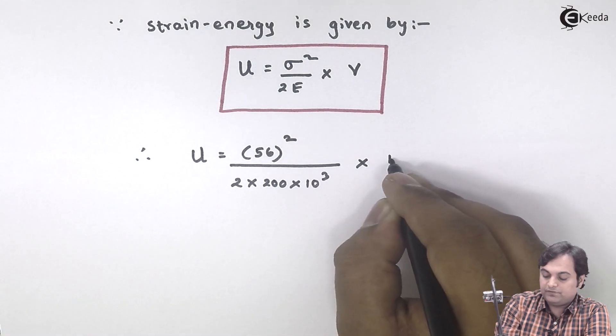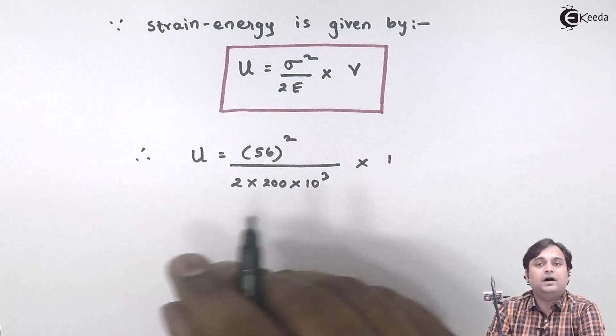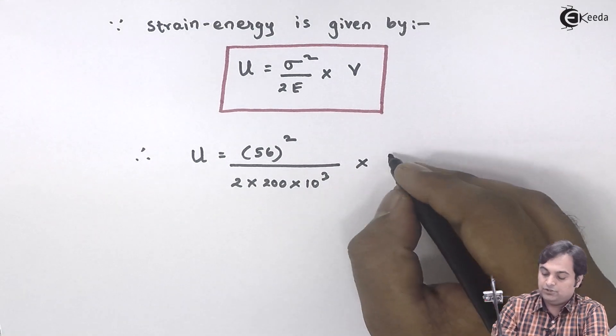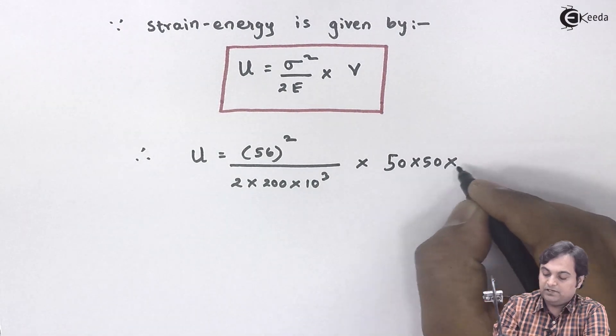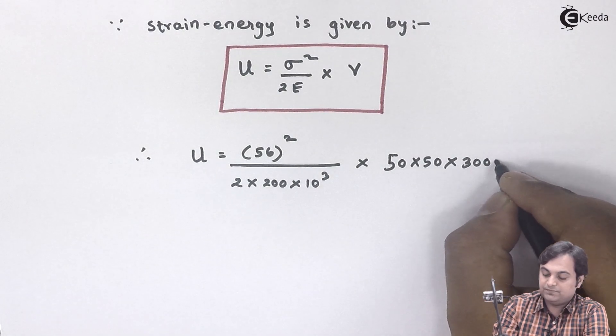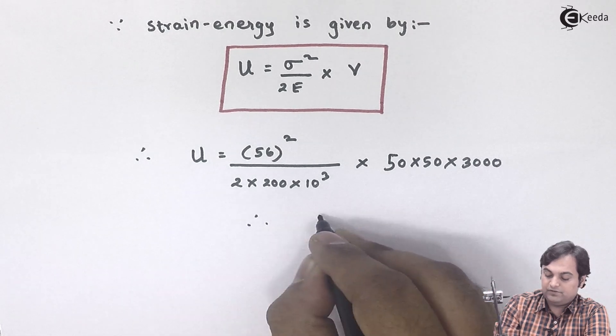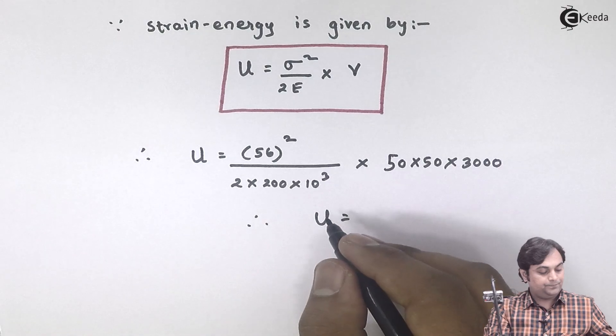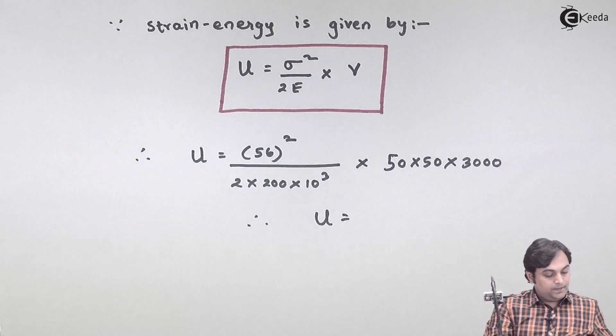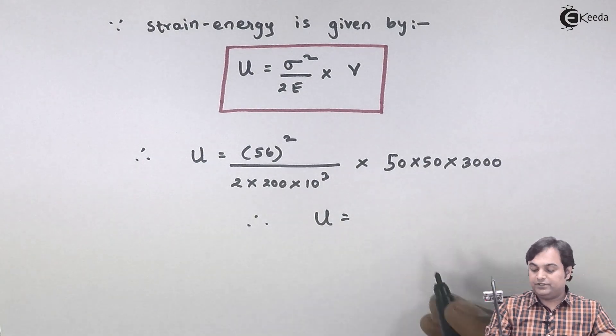Volume is, since it is given that here the bar is square in section, so volume will be area, that is 50 into 50, multiplied by length of the bar, which is 3000. So from this, we will be getting strain energy, and the value comes out to be 144 times 10 to the power 3 Newton-millimeters.